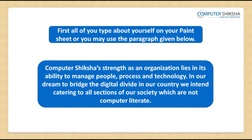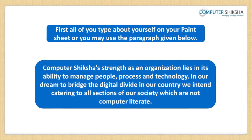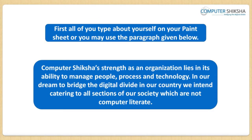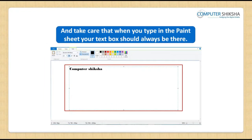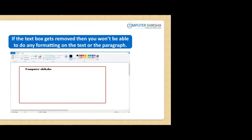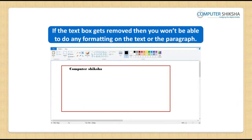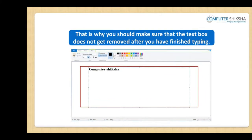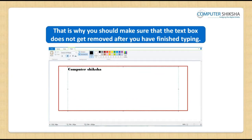First, all of you type about yourself on your paint sheet or you may use the paragraph being shown to you. Take care that when you type in the paint sheet, your text box should always be there. If the text box gets removed, then you won't be able to do any formatting on the text or the paragraph. That is why you should make sure that the text box does not get removed after you have finished typing.